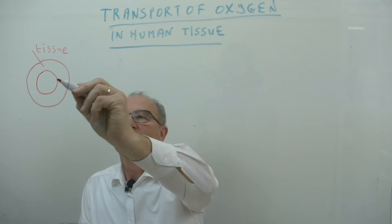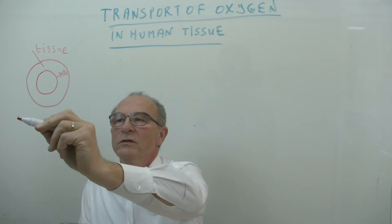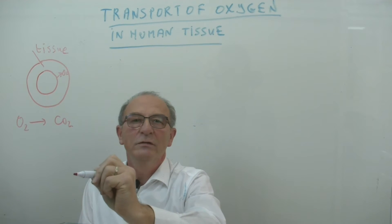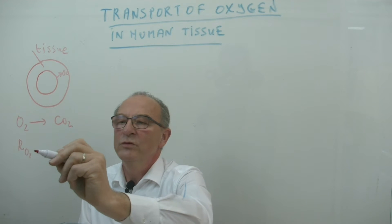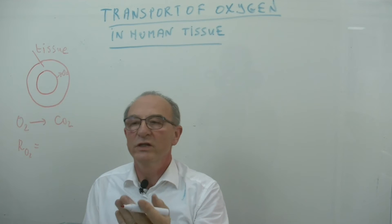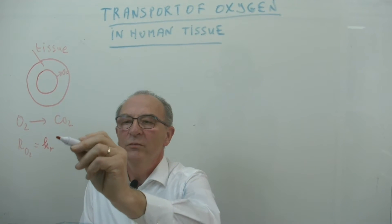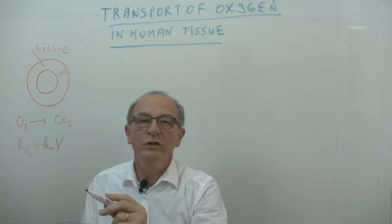He assumed that oxygen diffuses into the tissue and during this process it was converted into carbon dioxide. The reaction rate of oxygen he assumed was zero order. That means the concentration is to the power zero, which means that only a constant is left multiplied by the volume. So there is a constant conversion of oxygen into CO2.